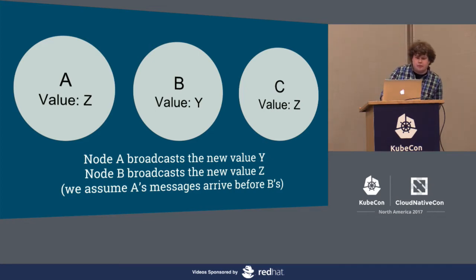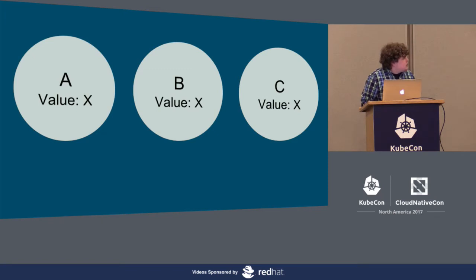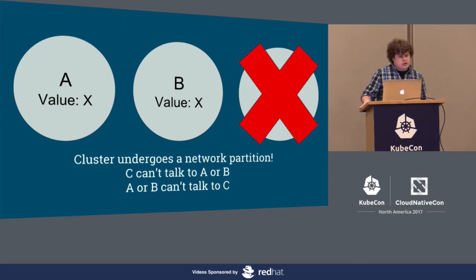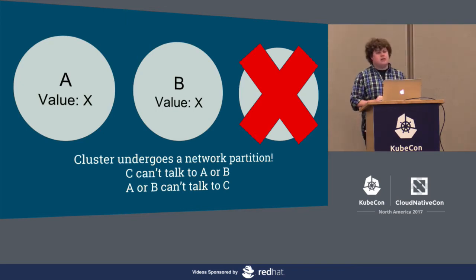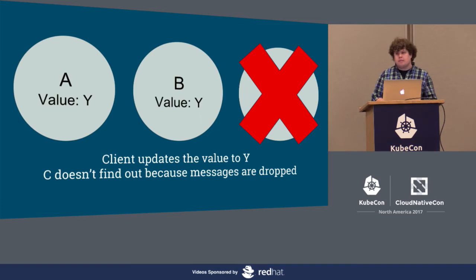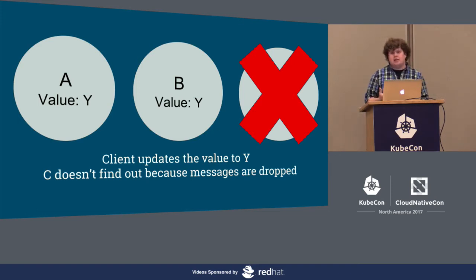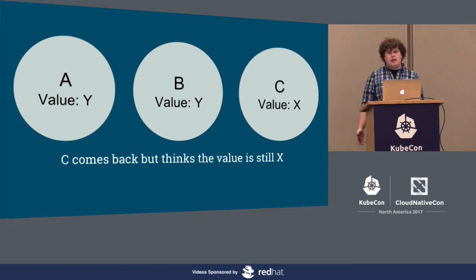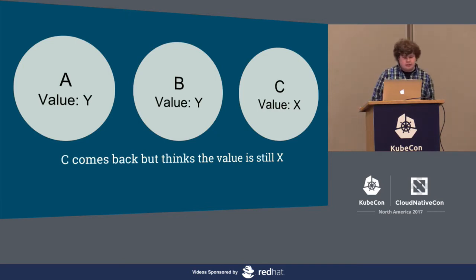In another scenario: A, B, and C all agree the value is X, then the cluster undergoes a network partition. C is unable to talk to A or B and all messages to and from C are dropped. A client, unaware of the problem, tells A the new value is Y. A broadcasts this — B gets it successfully, but the messages to C are dropped. When C recovers, the messages were lost forever. A and B think the value is Y, whereas C thinks the value is X.